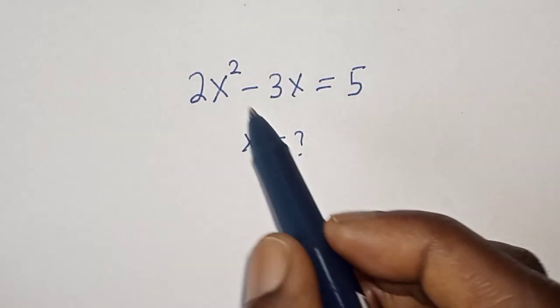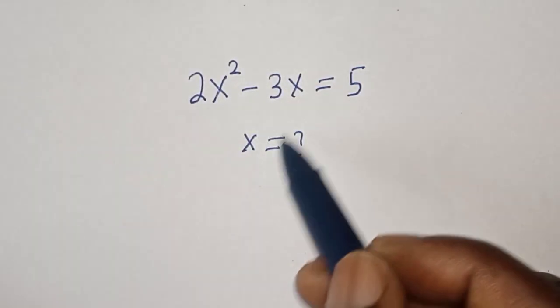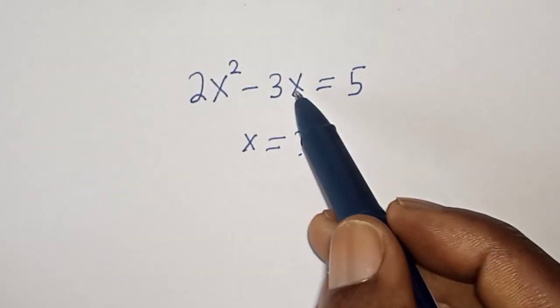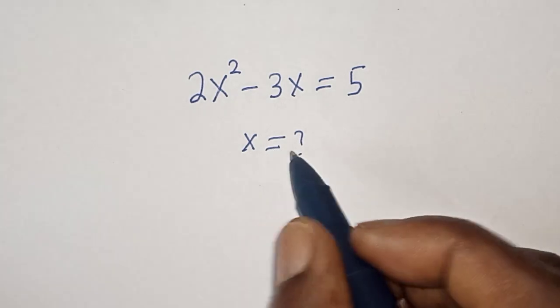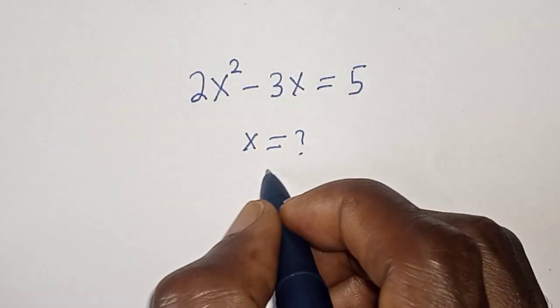Hello, welcome to Magist. In this class, we want to find the value of x from the given equation 2x² - 3x = 5. What is the value of x? Like, share, comment, and subscribe. Solution: